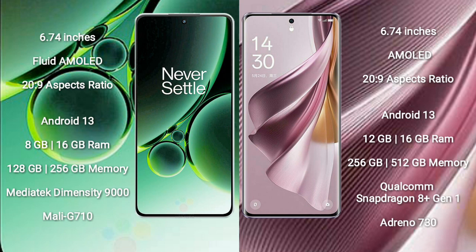The OnePlus Nord 3 comes with 8GB and 16GB RAM options, and 128GB and 256GB internal storage options. It is powered by the MediaTek Dimensity 9000 processor with a Mali-G710 GPU.